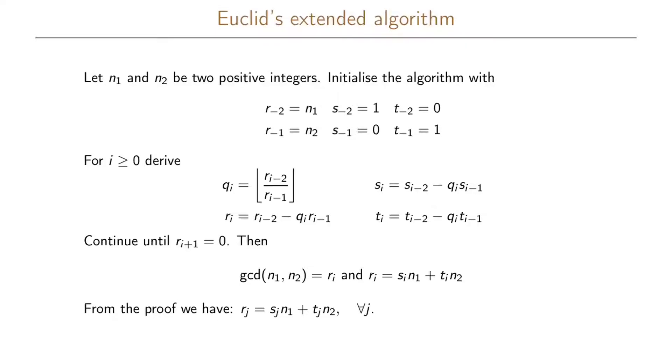We initiate some variables. We initiate r as r_{-2} is n1, s_{-2} is 1, t_{-2} is 0, r_{-1} is n2, s_{-1} is 0, and t_{-1} is 1. So when we have done this initialization, we do for all i's larger than or equal to 0...